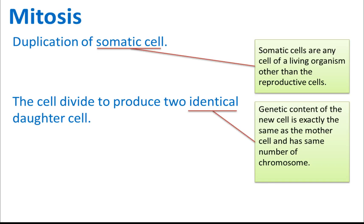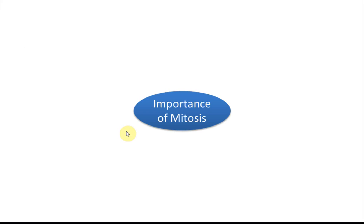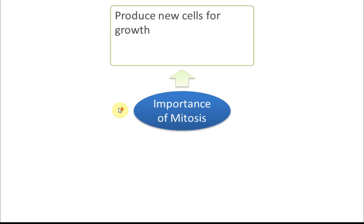So mitosis is a process of cell division to produce two identical daughter cells. The cell that is produced is called a daughter cell. The importance of mitosis — why we need to have mitosis in an organism, especially in the human body — first, it is to produce new cells for growth in growing organisms.